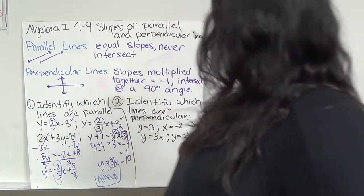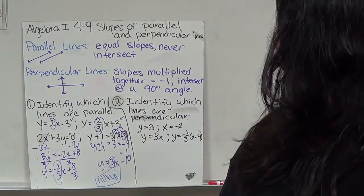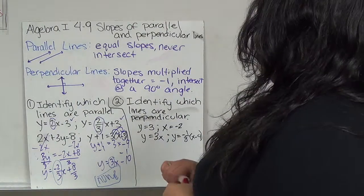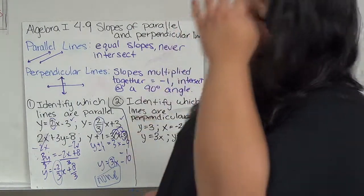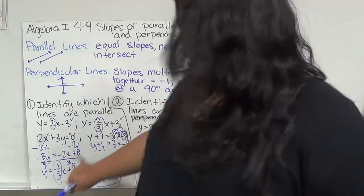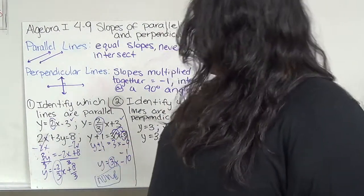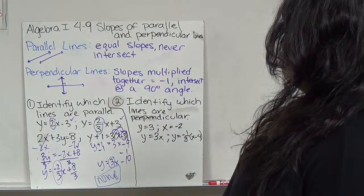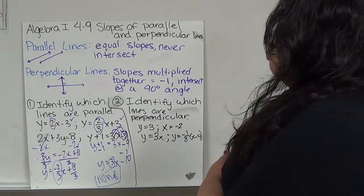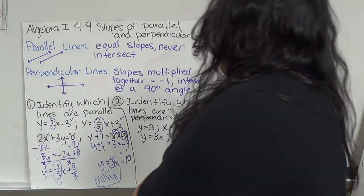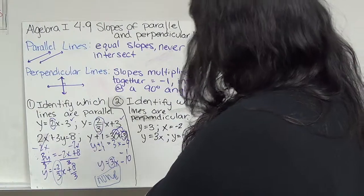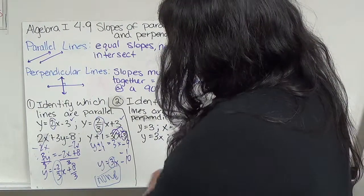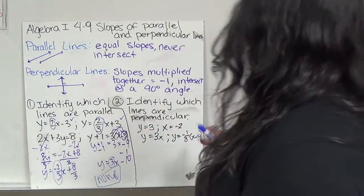These were close, but this one's negative and this one's positive, so it's not the same. This one is 3. We're looking at just the m, the numbers in front. None of them equal, so we'll say none are parallel. In order for them to be parallel, it doesn't matter what their y-intercept is, but what does matter is their m's.